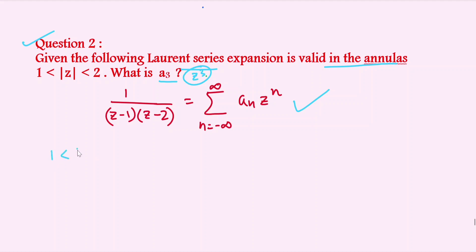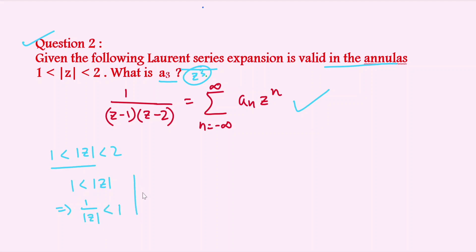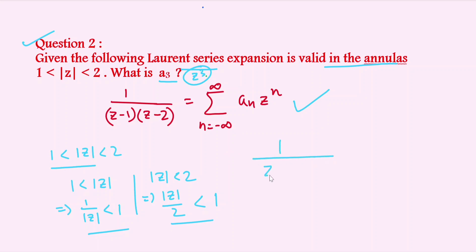For the first part, 1 < |z|, so 1/|z| < 1. For the second part, |z| < 2, so |z/2| < 1. These two conditions give us the expansions we need. Now we write the given function 1/(z−1) · 1/(z−2) as a partial fraction.